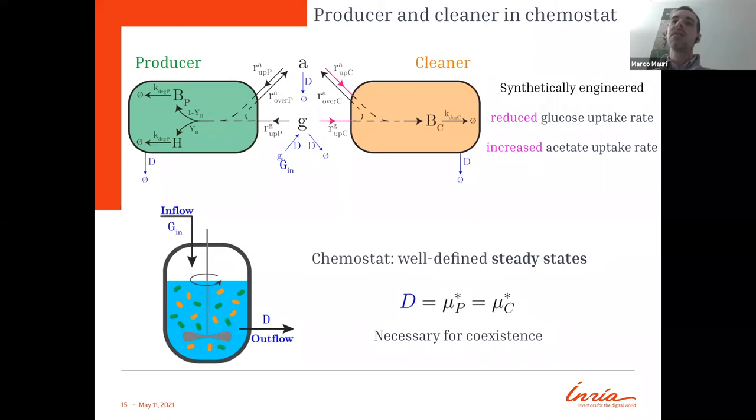We decided to study this consortium in chemostat. Why? Because it's a well-defined environment where we can have steady states, and we can provide glucose by an inflow and take out the nutrient and the biomasses and the H protein via an outflow. At steady state, specifically in chemostat, dilution rate means that the growth rate of the producer and the cleaner are actually equal. So whenever I talk about dilution rate, I'm also saying setting the producer and cleaner growth rate.